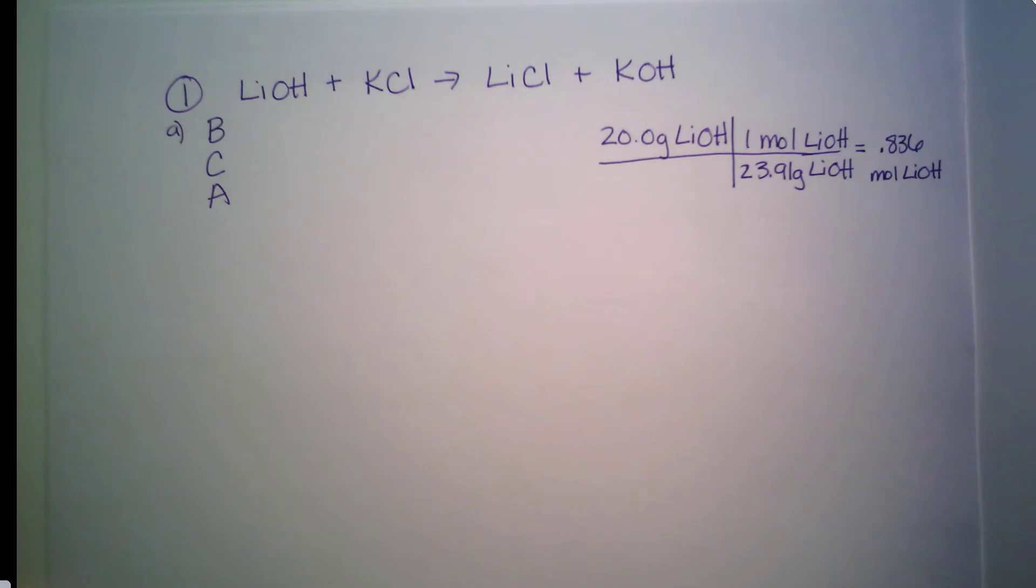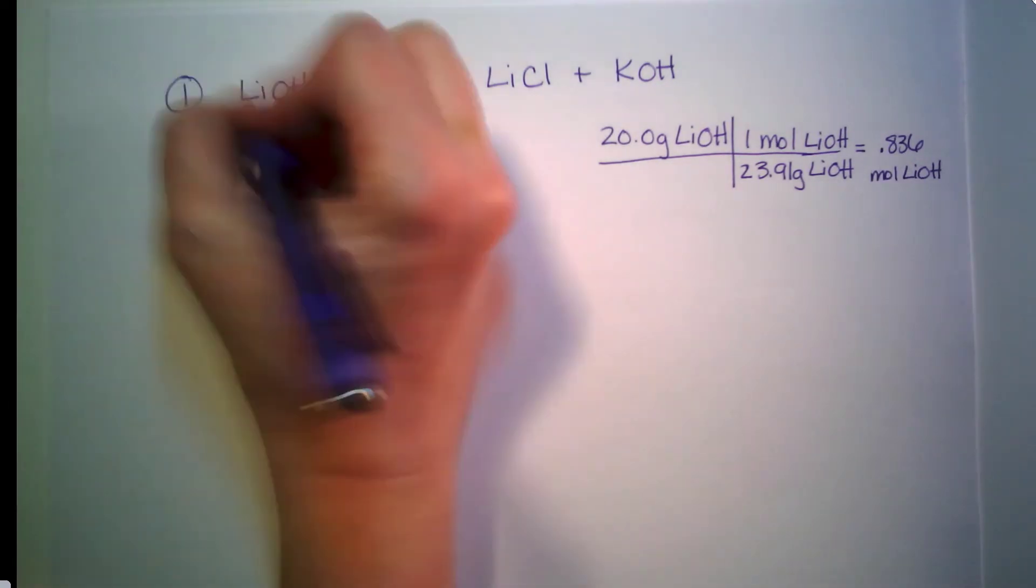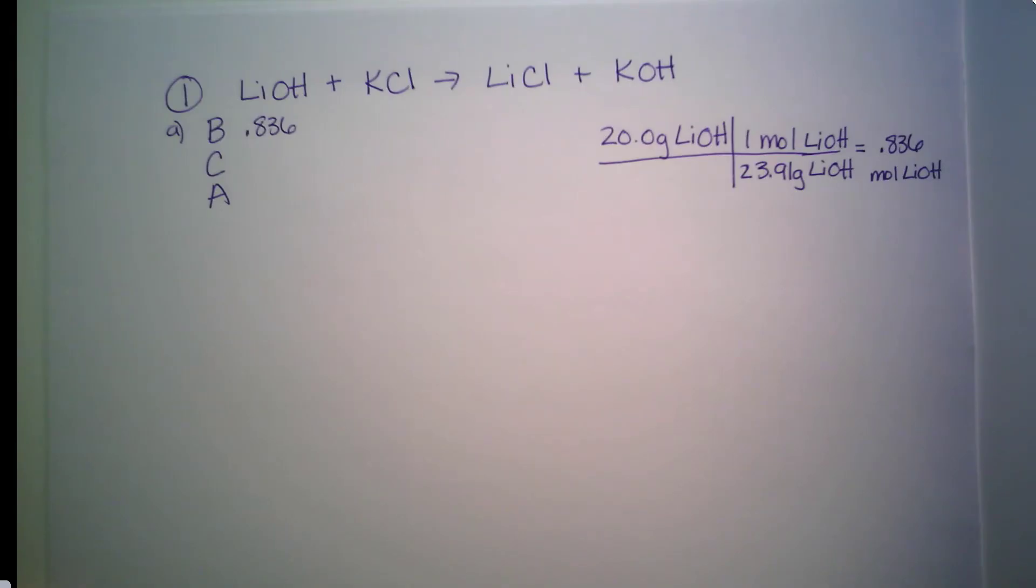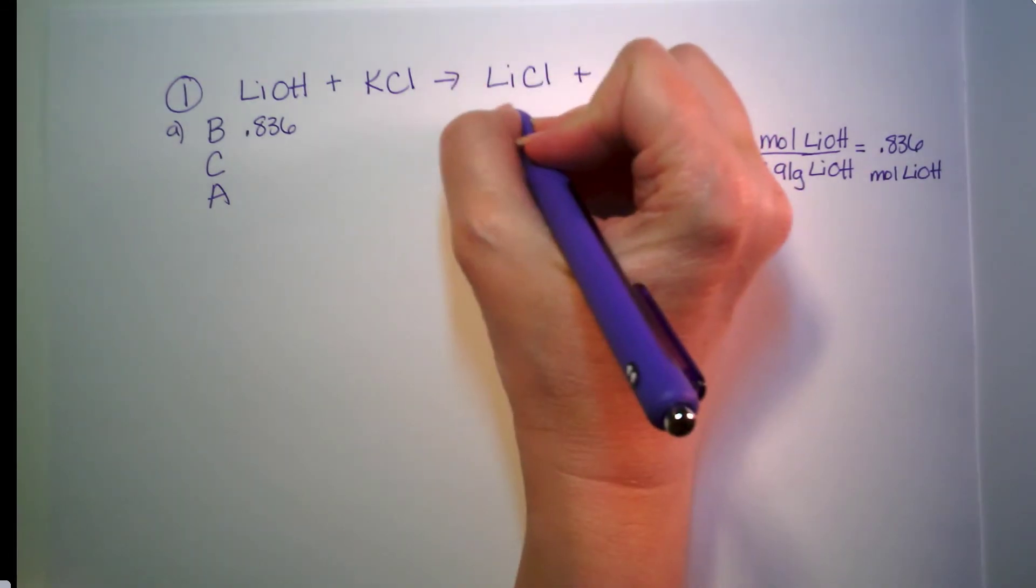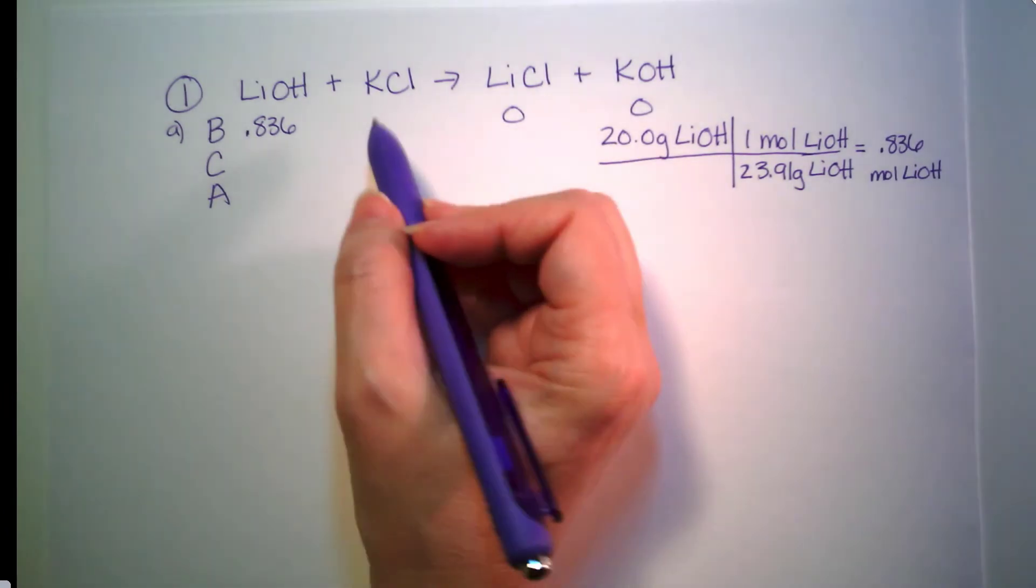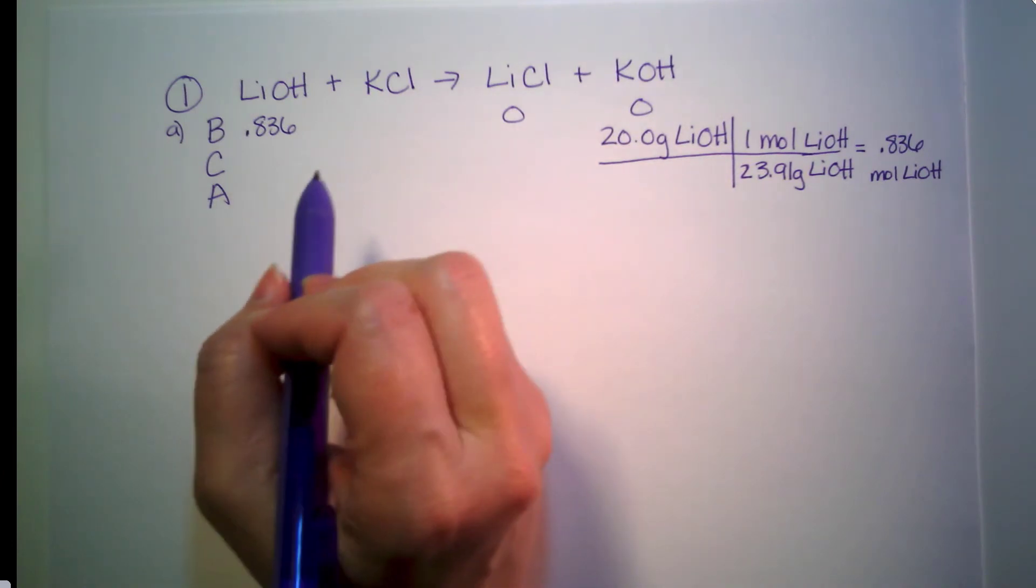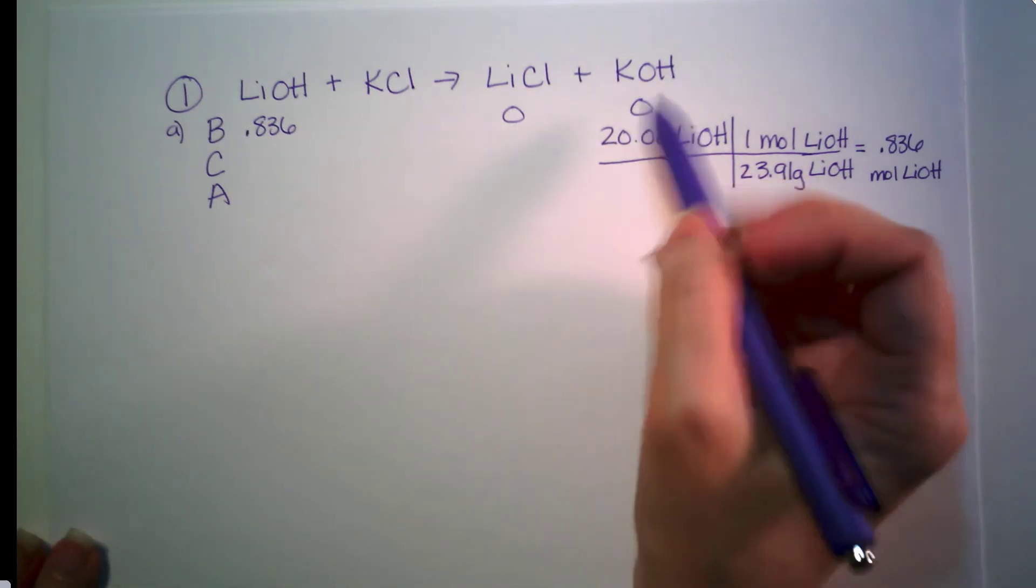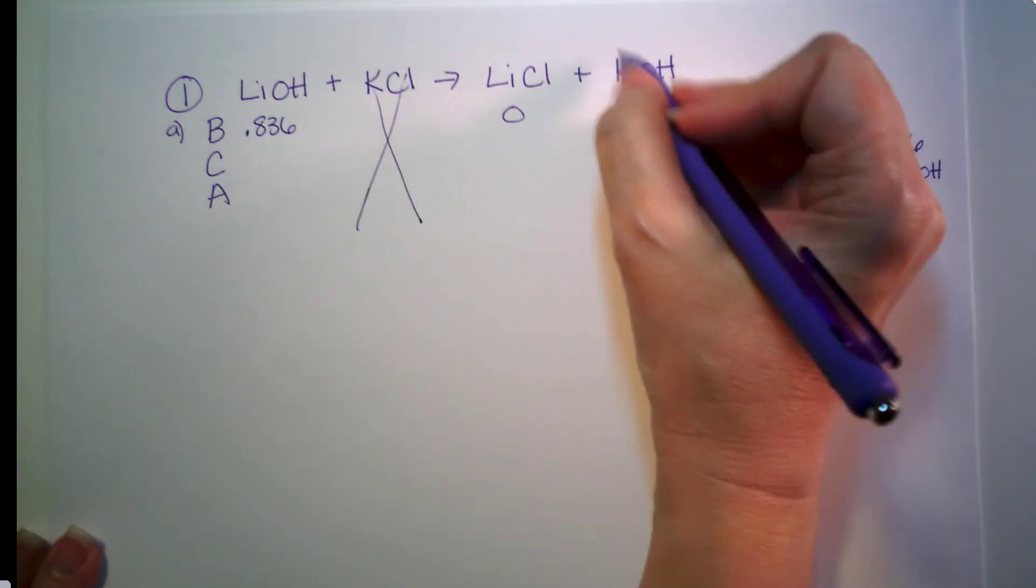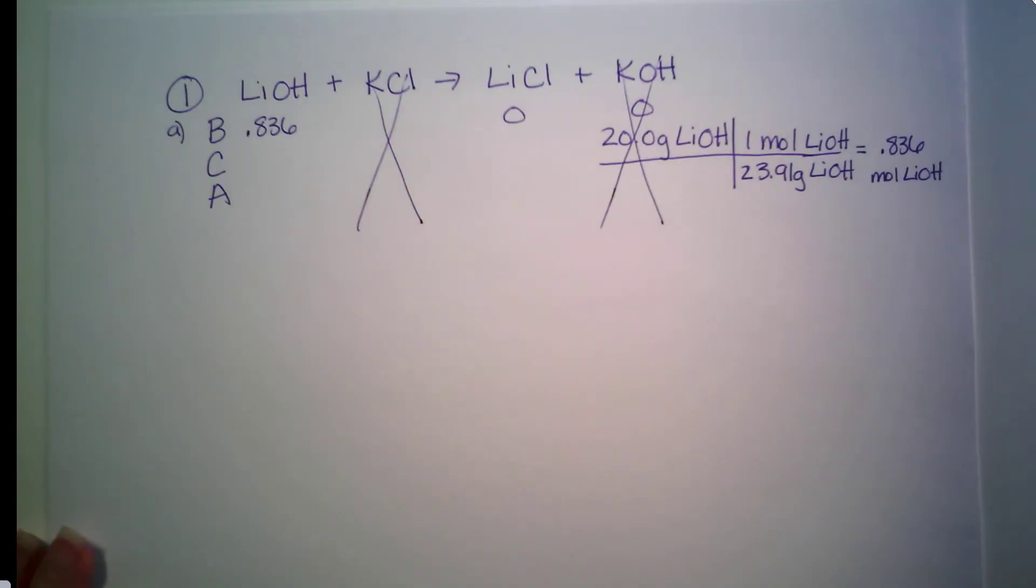So where does that go? That's one of our knowns. Lithium hydroxide, so I can put this here, 0.836 moles. So what else do we know? We know both of our products are going to be 0 because we haven't made anything yet, and we do not know anything about KCl. Now, if you look in the problem, they don't mention it at all. They also don't mention the potassium hydroxide, so we can actually just cancel those out and not worry about them.